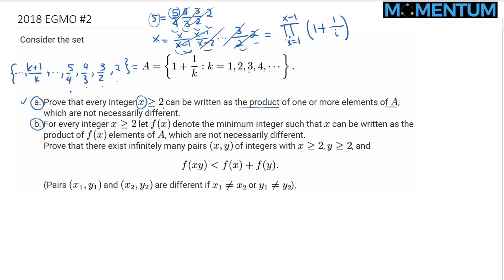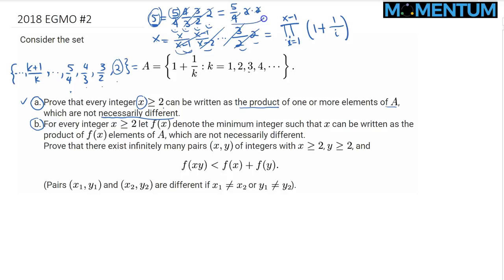For the second part, we need to optimize. There are more efficient ways to write 5: instead of 4 elements from A, we can use 5/4 times 2 times 2 — the 2s cancel with the 4, giving 5 with only 3 numbers. Can we achieve 5 using only 2 numbers? No, because the largest element of A is 2, so 2×2=4 at most. So we need at least 3, and we've shown 3 is achievable. The function f(x) represents how many terms from set A you need to multiply to reach x.